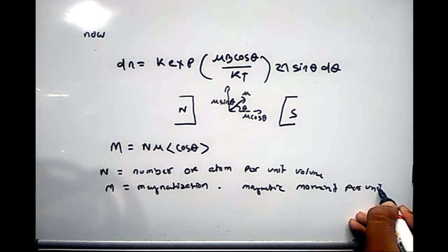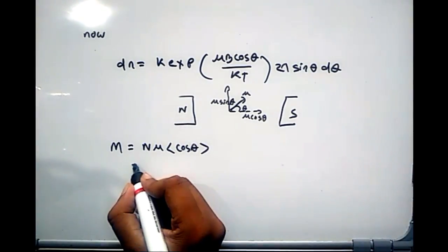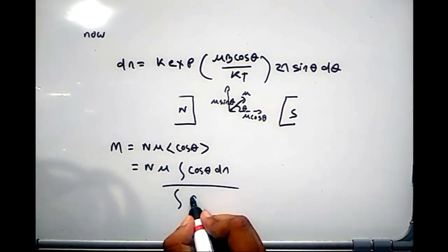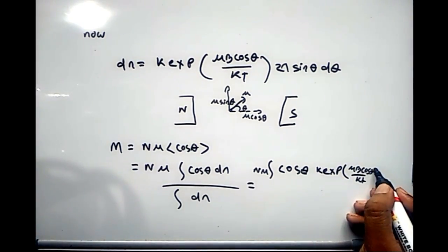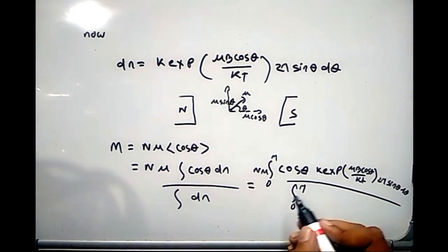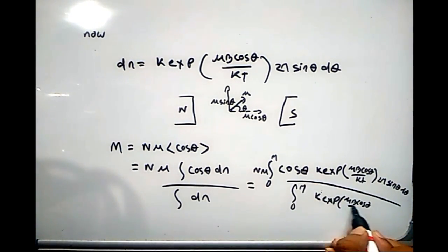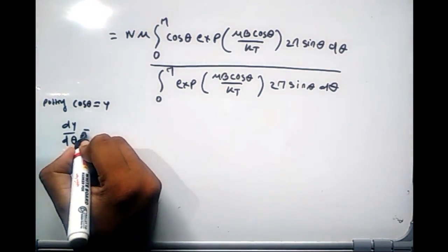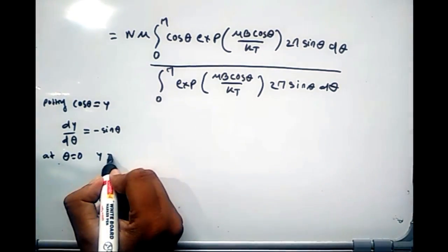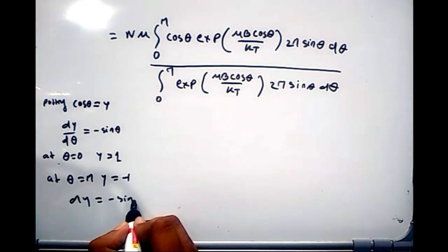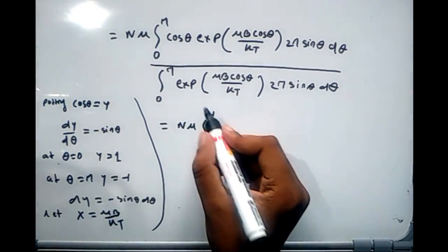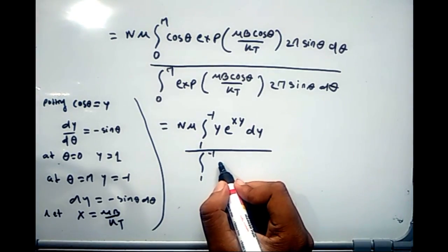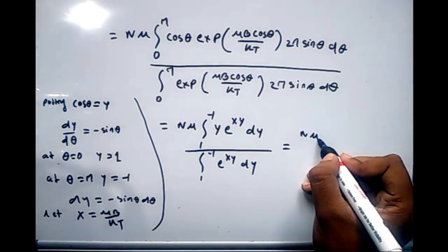Magnetization M = nμ ⟨cosθ⟩ = nμ · [∫₀^π cosθ dN] / [∫₀^π dN]. Substituting the expression for dN, the numerator becomes ∫₀^π cosθ · e^(μB cosθ / kT) · 2π sinθ dθ. Setting cosθ = y, so that for θ = 0, y = 1 and for θ = π, y = −1, and letting x = μB/kT...